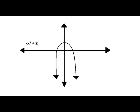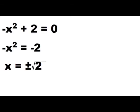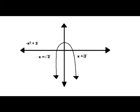Final graph: negative x squared plus two. This one is a little bit different because it opens down since we have negative x, but we just move it up two. Nothing big — this is an easy one. We solve for x and get x equals plus or minus the square root of two. Let's mark those zeros on there.